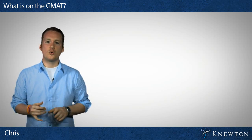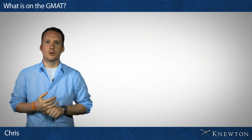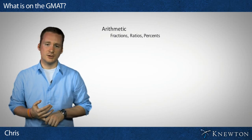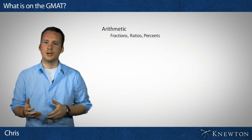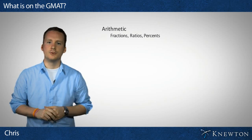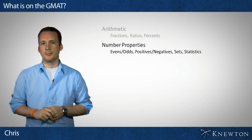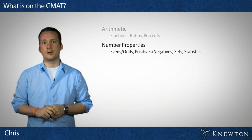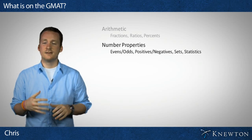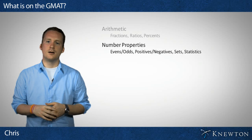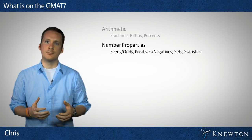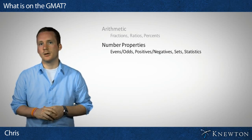Let's first talk about the quantitative part. On the quantitative section, you're going to find things like arithmetic, which includes fractions, ratios, percents, and basic calculations — things you've been doing most of your life. You're also going to have number properties, which covers things like evens and odds, positives and negatives, sets, statistics, prime numbers, and properties about the way numbers behave.